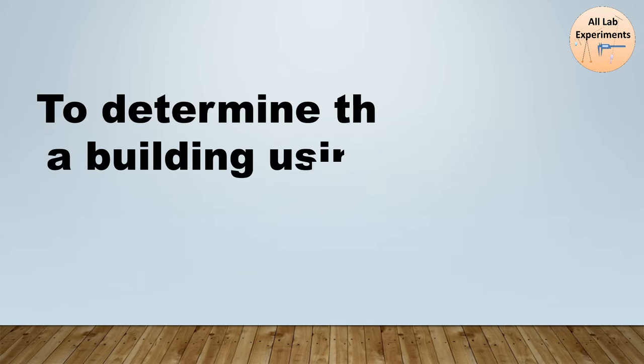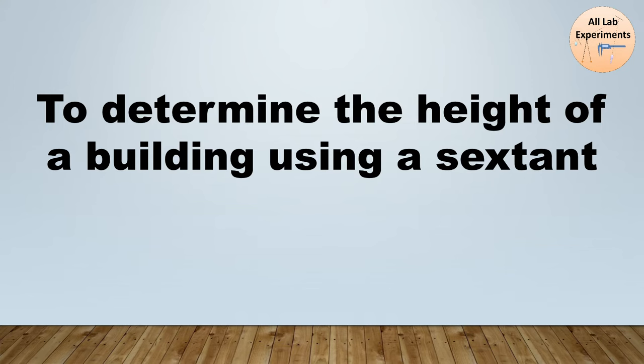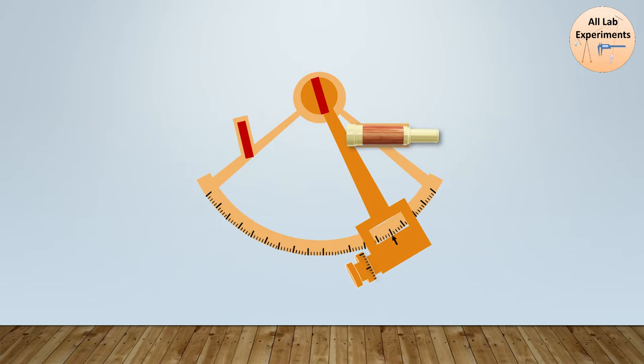Hello friends, now we are going to perform an experiment to determine the height of a building using a sextant. So first of all, what is a sextant? This is the machine—majorly it can be said that this machine has two parts.